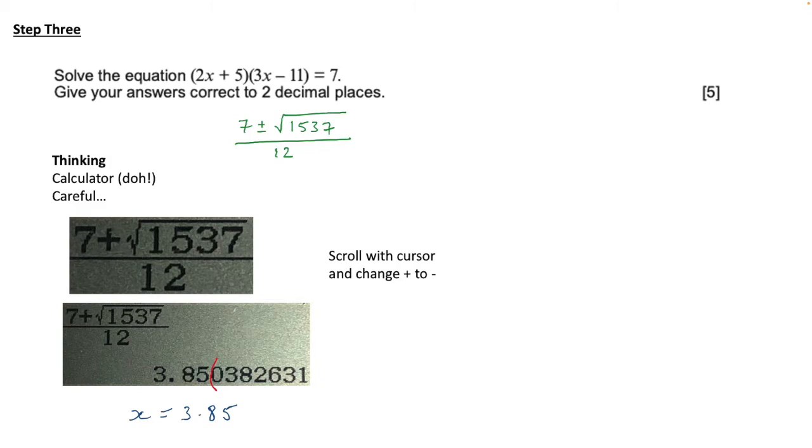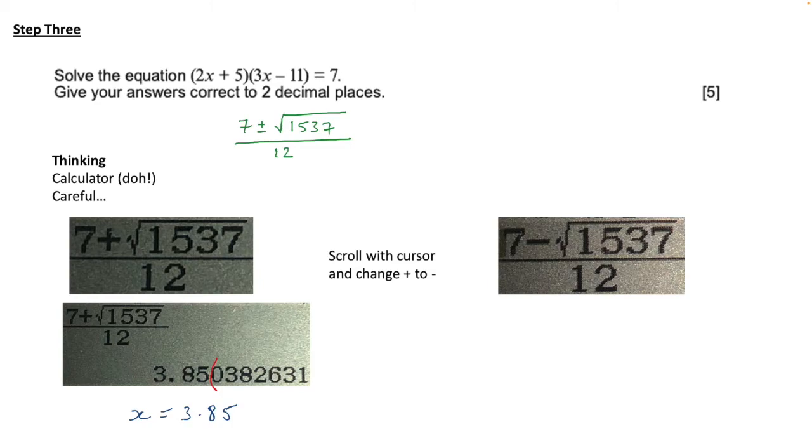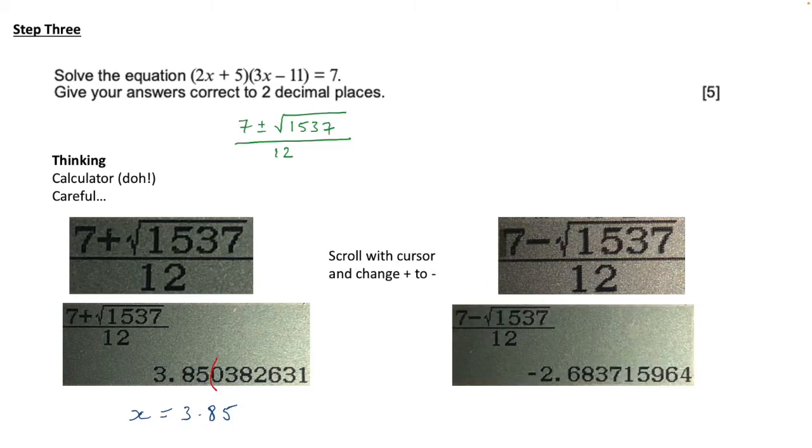Then we can scroll with the cursor in order to change the plus to a minus. We then press equals. Again we look at the digit after the second decimal place. It's less than 5 and so we can ignore it and we get x equals minus 2.68.